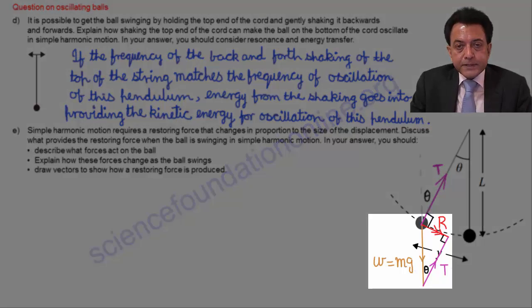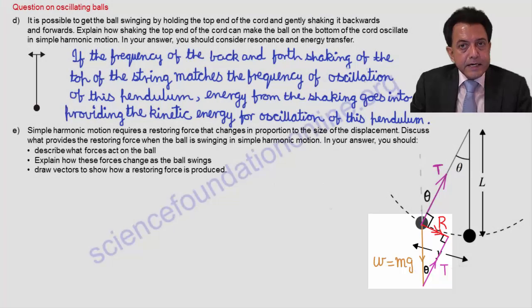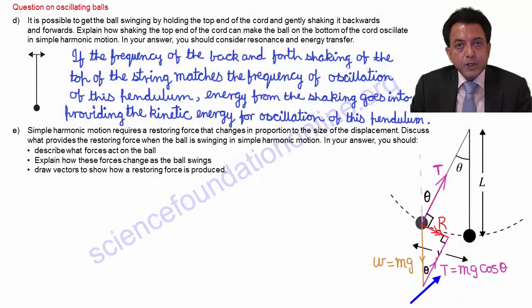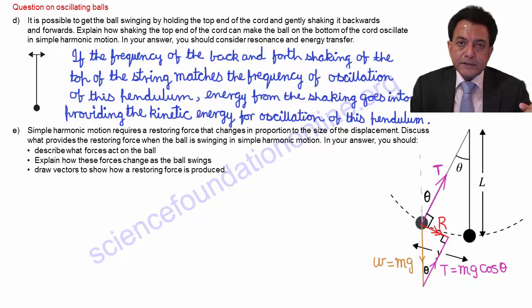From this diagram, we can see that T equals mg cos theta. Because cos theta decreases as theta increases from 0 degrees, tension force T decreases as the angle theta increases.